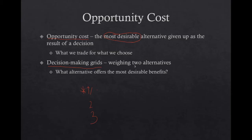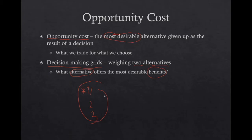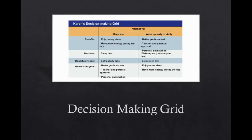When you're doing that, you're weighing two alternatives, similar to how you would make a pros and cons list, but it goes into more detail to really look at the alternatives and what the benefits are. Most importantly, you're trying to find what your trade-offs and opportunity costs would be to find out if the decision really is good. Here's an example of a decision-making grid.